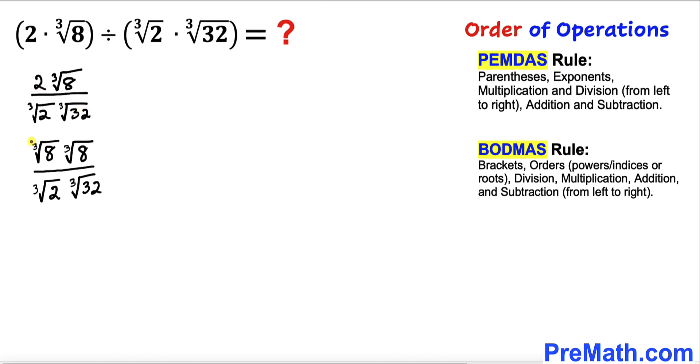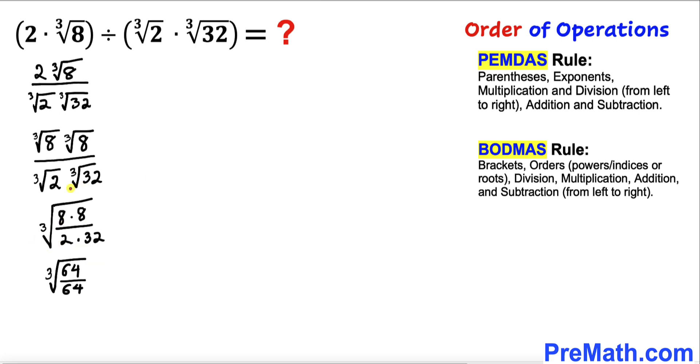Now since we are dealing with all these cube roots, since our indices are 3, we can write all these numbers under the same shelter. I can write 8 times 8 on the numerator divided by 2 times 32 with a cube root.